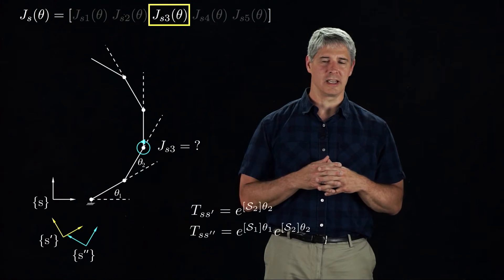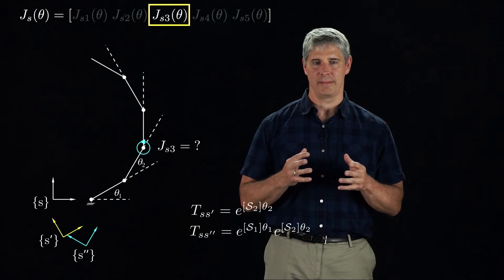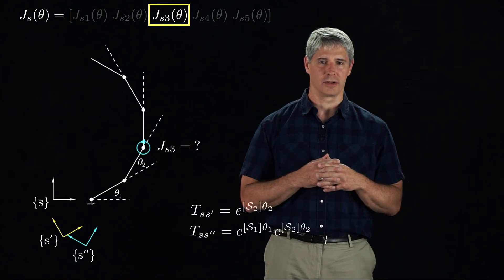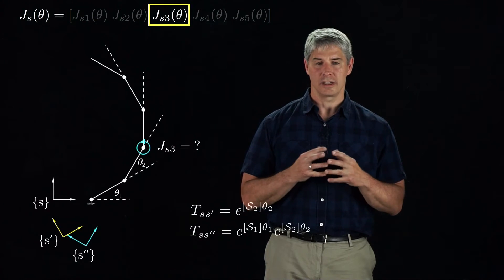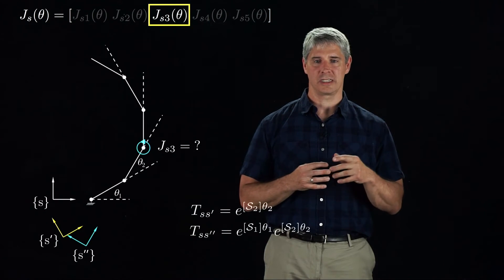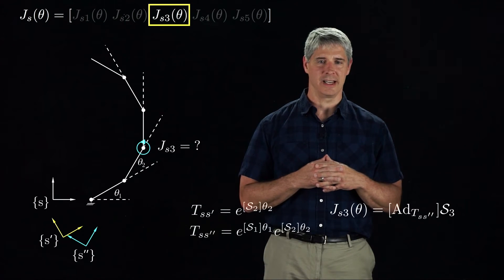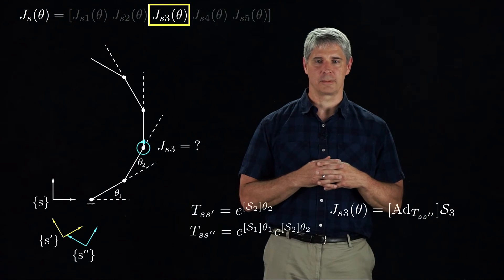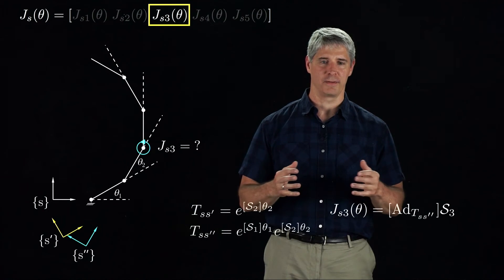The reason we constructed the S-double-prime frame is that the screw axis of the third joint is the same in the S-double-prime frame as the screw axis S3 of the third joint in the S-frame when the arm is at its zero configuration. So to find Js3, we just need to express S3 — now corresponding to the screw axis in the S-double-prime frame — as the screw axis expressed in the S-frame. We use our standard rule for changing the reference frame of a twist, which gives us the final expression.